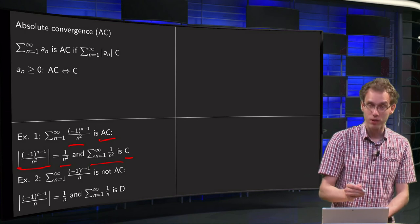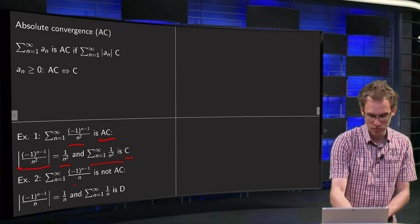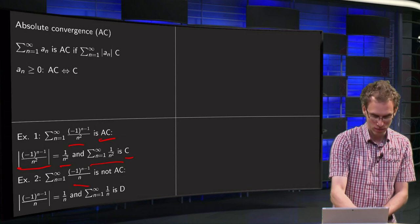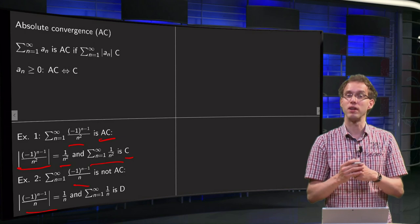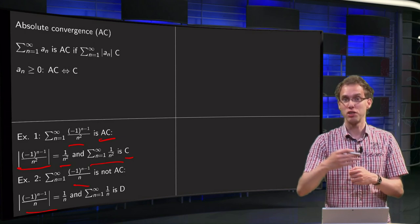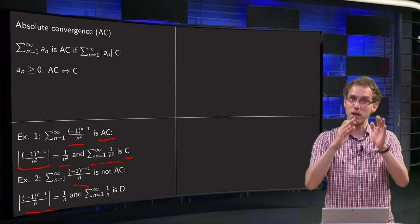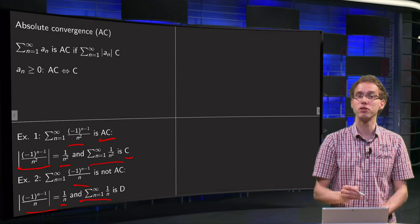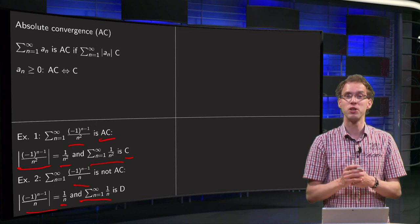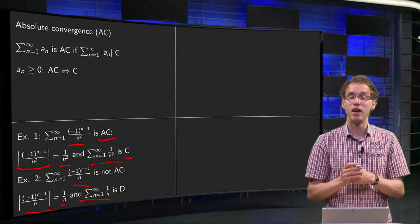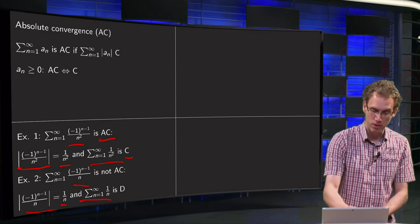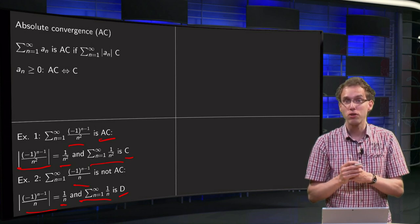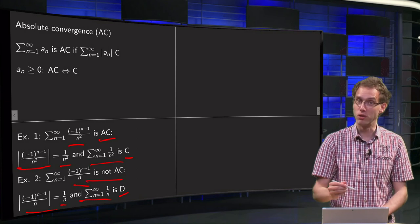Let's look at another example, which is almost the same, but now we have (-1)^(n-1) divided by n. Again we take the absolute values. Since n is always positive and |(-1)^(n-1)| equals 1, we get 1/n. However, the series sum from n=1 to infinity of 1/n is a harmonic series, or a p-series with p ≤ 1, so it is divergent. Therefore our original series is not absolutely convergent.